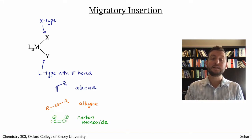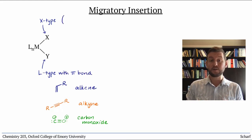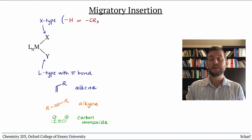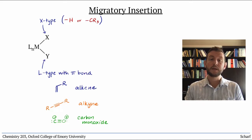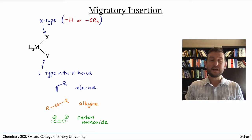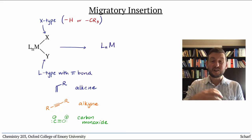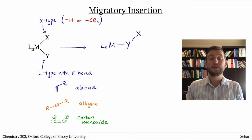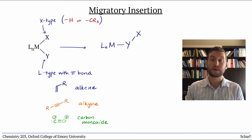The X-type ligand is typically either hydrogen or an alkyl group, but other X-type ligands can sometimes participate in this reaction as well. The process involves the L-type ligand inserting into the M-X bond, losing one of its pi bonds in the process.